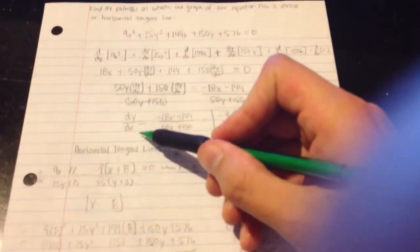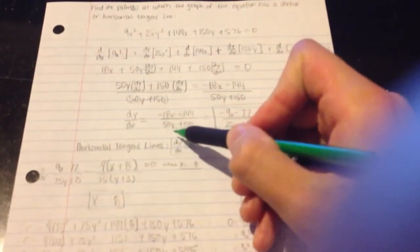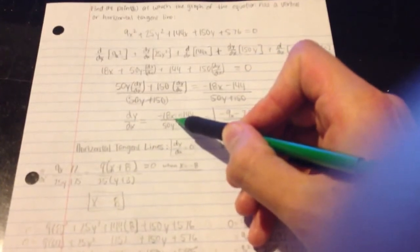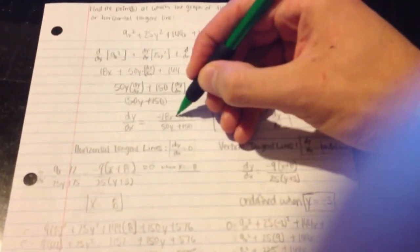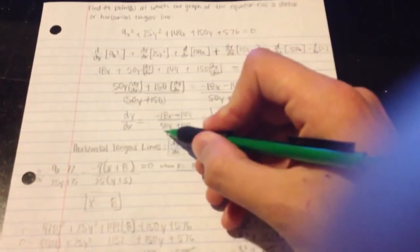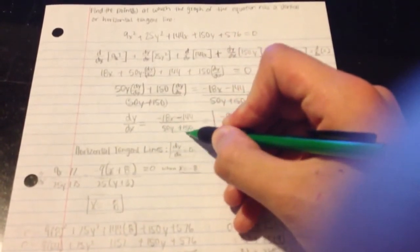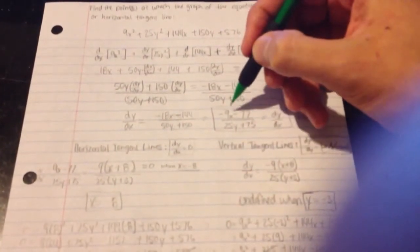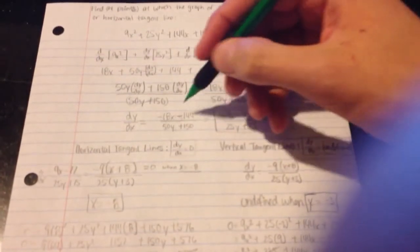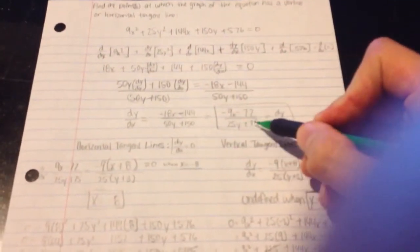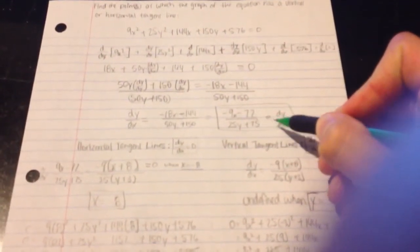dy dx ends up being negative 18x minus 144 over 50y plus 150. Now, I can simplify this by dividing everything by 2, and it would leave me with an equivalent equation.